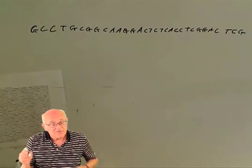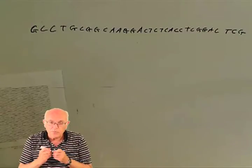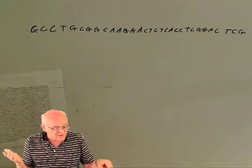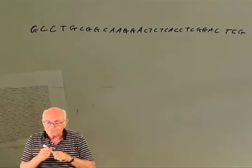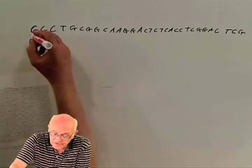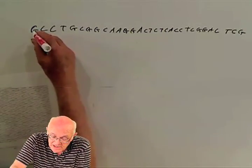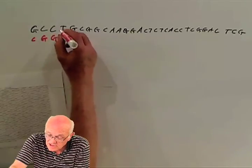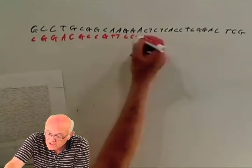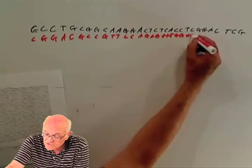Of course, the nature of DNA is that if you have one strand, you know what the other strand looks like. So let's go ahead and add the other strand. Let's do it in red. So G gives you C, C gives you G, C gives you G, T gives you A, G gives you C.